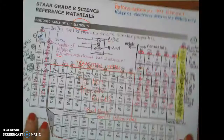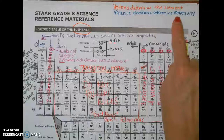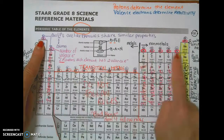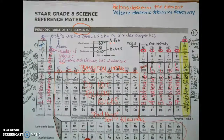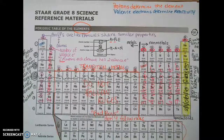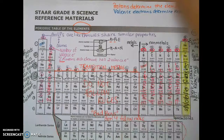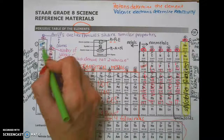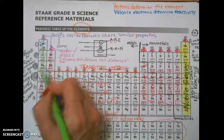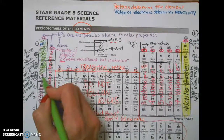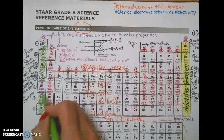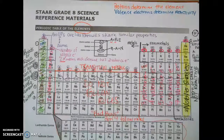The valence electrons, as we said earlier, determine an element's reactivity. So these valence electron numbers are important to see how elements will bond with one another. If I have one valence electron, I am in group number one — I am going to shade these kind of green because they will react or bond, because they all want eight valence electrons.